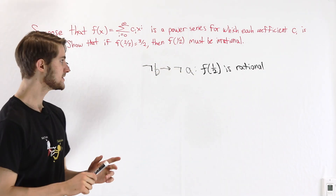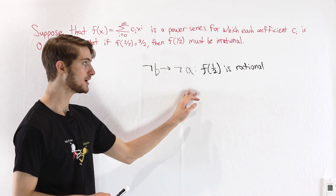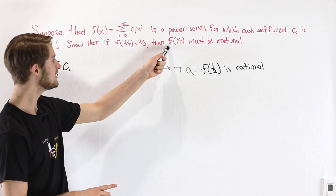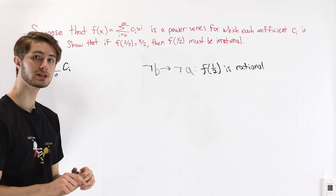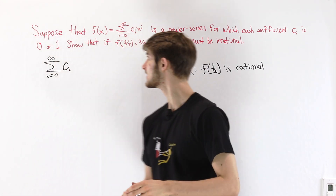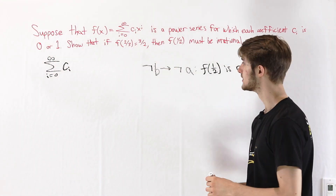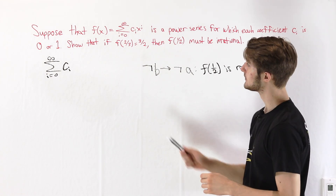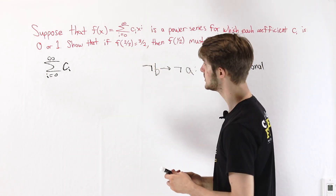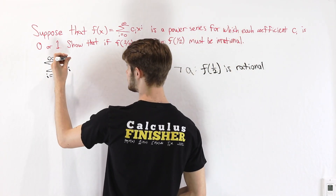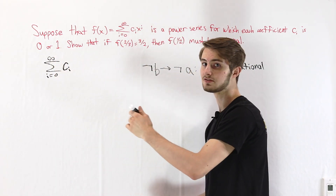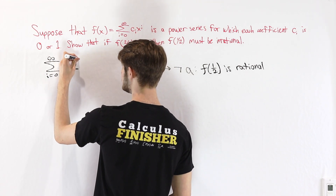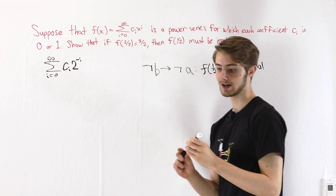The reason that proving by contrapositive is useful for us is that f(1/2) is actually a lot easier to decipher than f(2/3). So let's think about what f(1/2) means. That's going to be the sum from i equals 0 to infinity of c sub i times (1/2) to the power of i, which is the same thing as 2 to the negative i.